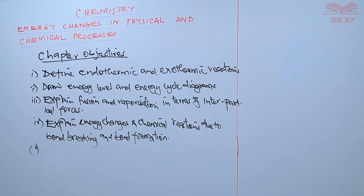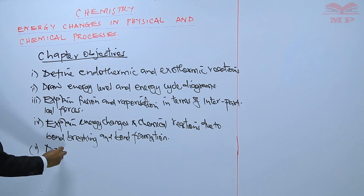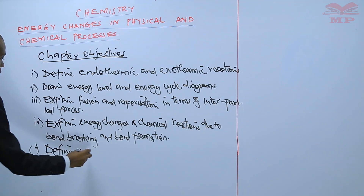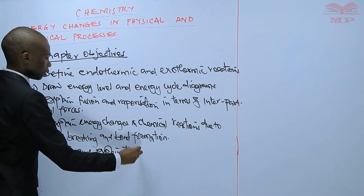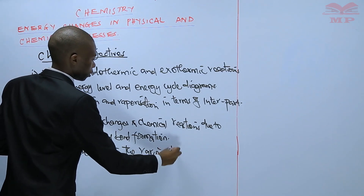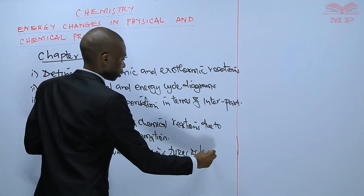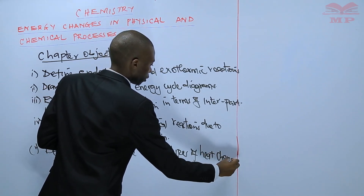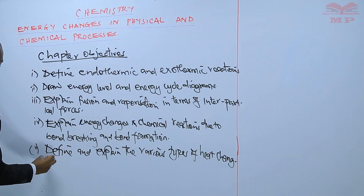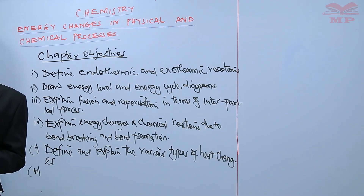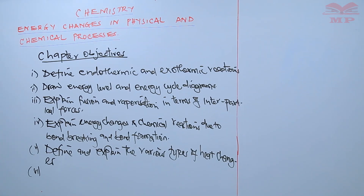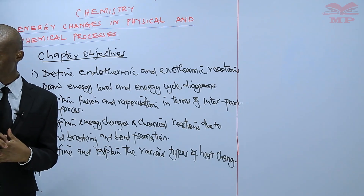Our fifth objective is to define and explain the various types of heat changes. Our sixth objective: you should be able to carry out some experiments to determine enthalpy changes for some reactions.